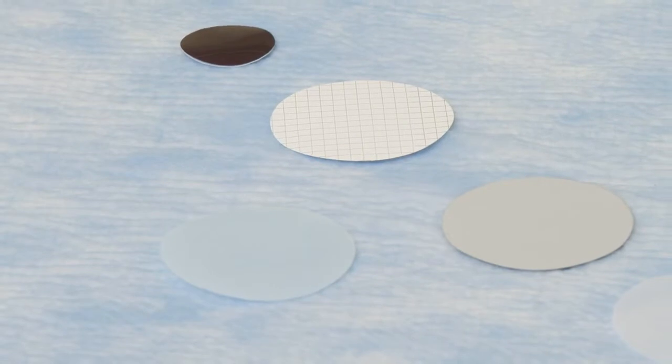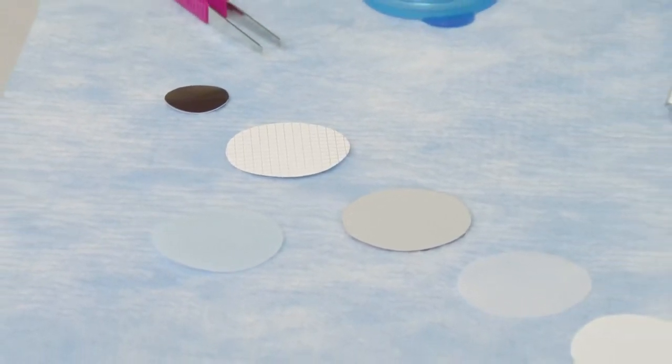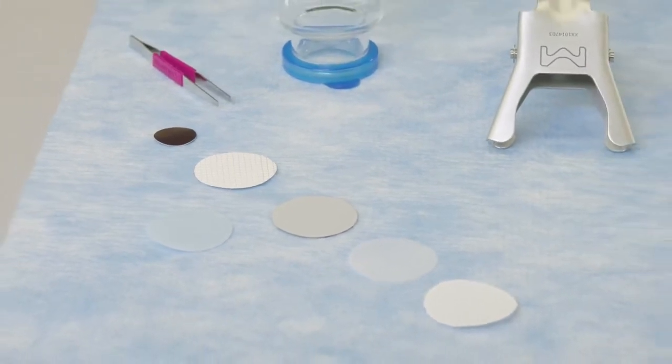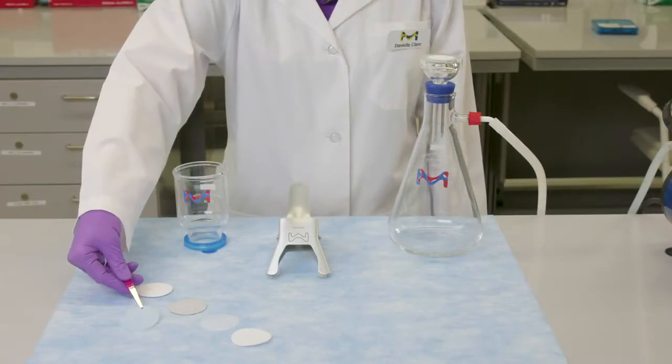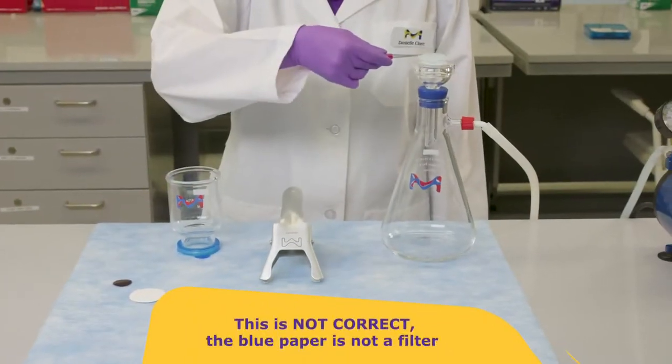The non-blue disks are the membrane filters. These can be white, black, gridded, or non-gridded. The blue disks are always anti-static paper separating and protecting the membrane filters. These blue disks should never be used as filters.